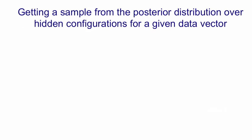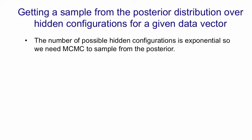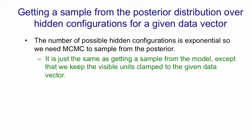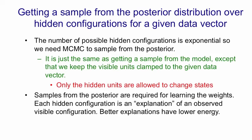What about getting a sample from the posterior distribution over hidden configurations when given a data vector? It turns out we're going to need that for learning. So the number of possible hidden configurations is again exponential. So again we use Markov chain Monte Carlo and it's just the same as getting a sample from the model except that we keep the visible units clamped to the data vector we're interested in. So we only update the hidden units. The reason we need to get samples from the posterior distribution given a data vector is we might want to know a good explanation for the observed data and we might want to base our actions on that good explanation, but we also need to know that for learning.